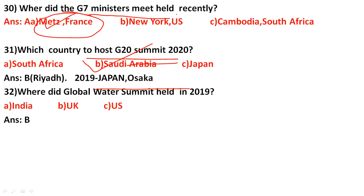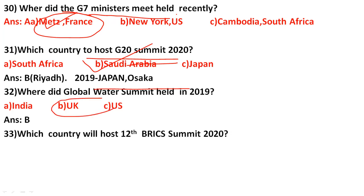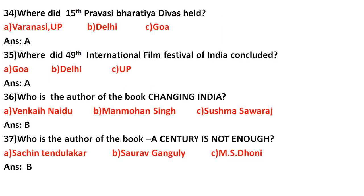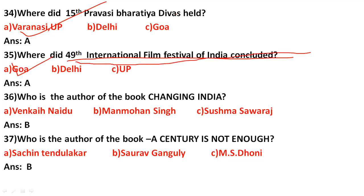Which country will host the 12th BRICS Summit 2020? The correct answer is Russia — Brazil hosted the previous one. Where did the Pravasi Bharatiya Divas held recently? The options are Varanasi, Delhi, and Goa. The correct answer is Varanasi. The 49th International Film Festival of India was held in Goa.